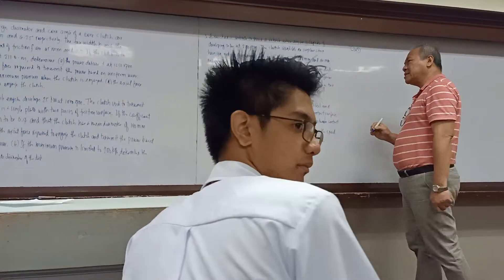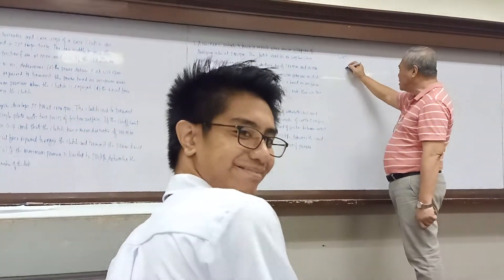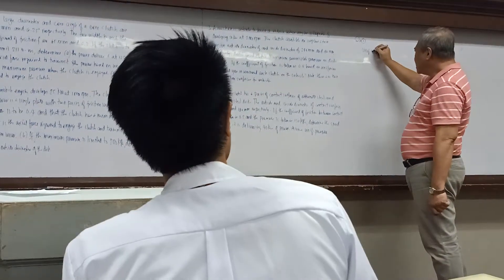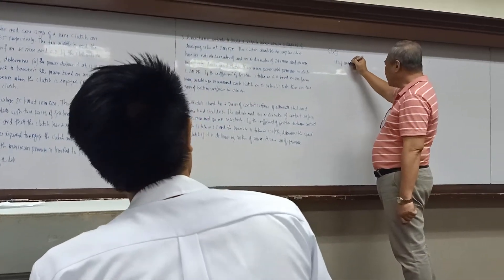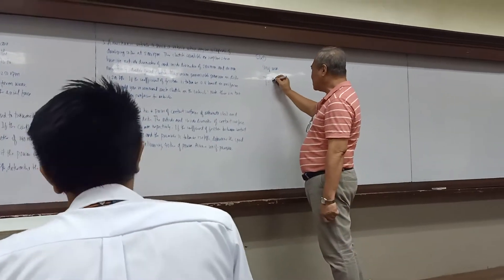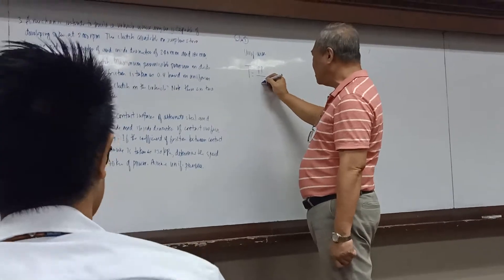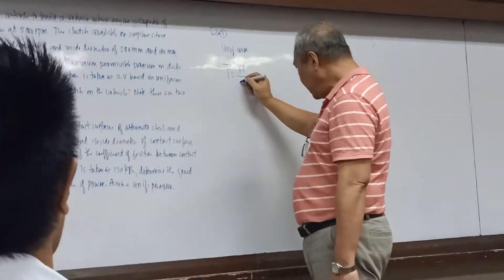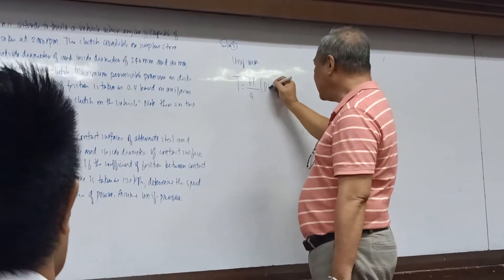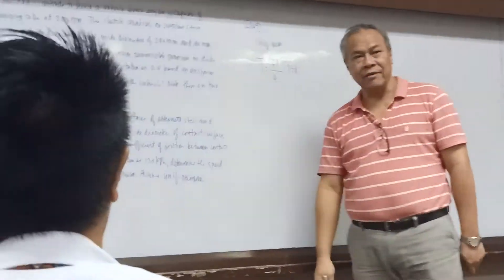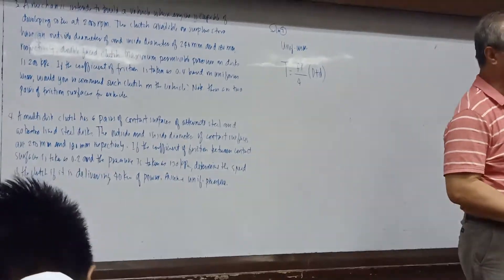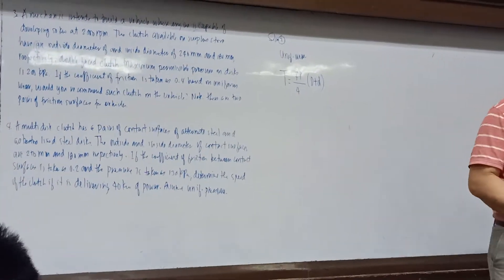In terms of the uniform wear method, the torque will be equivalent to Fp divided by 4, times the quantity (d_o + d_i). That is our equation for the uniform wear method.